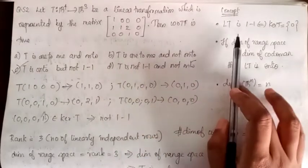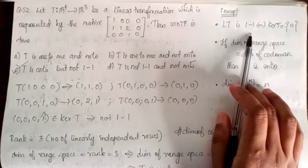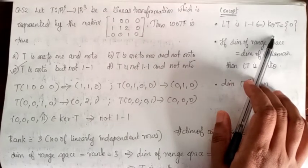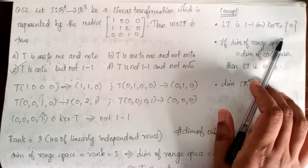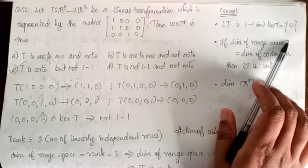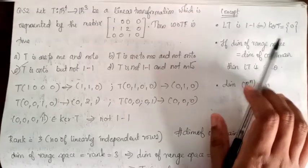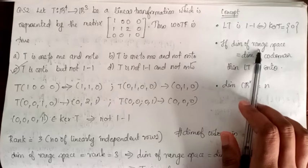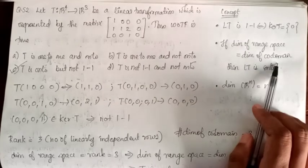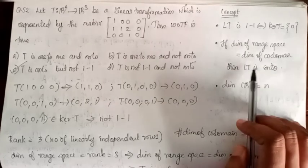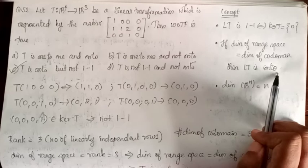A linear transformation is one-to-one if and only if the kernel of T is equal to the zero vector. If the dimension of the range space equals the dimension of the codomain, then the linear transformation is onto.